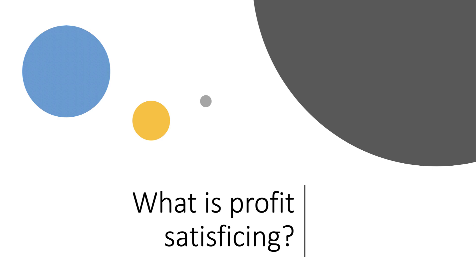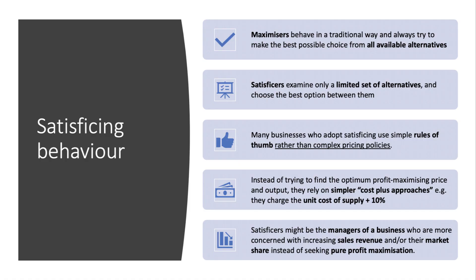The idea of satisficing came from the economist Herbert Simon, and he argued that people tend to make decisions by satisficing, which is a combination of sufficing and satisfying. They don't try and optimise every decision. They're looking for a choice, a price, an output, for example, that is just good enough in the light of the costs and the constraints involved.